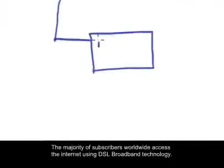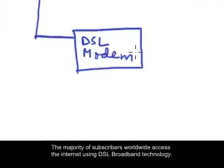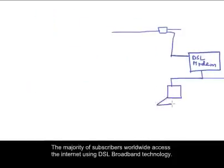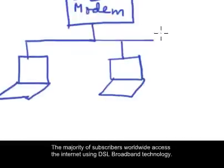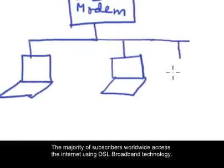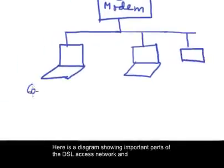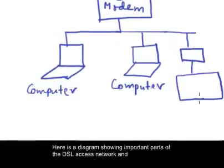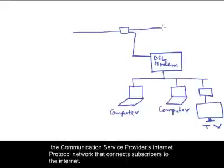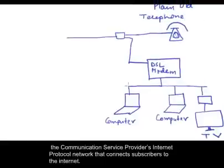Internet protocol is what runs the internet. The majority of subscribers worldwide access the internet using DSL Broadband technology. Here is a diagram showing important parts of the DSL access network and the communication service provider's internet protocol network that connects subscribers to the internet.